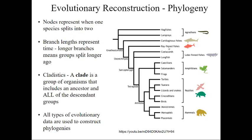Over here we've got our fish. So of course our fish is a clade. Here's our ancestor back here. So we've got lungfish, coelacanth, ray fin fish, cartilaginous fish, lampreys, and hagfish over here.